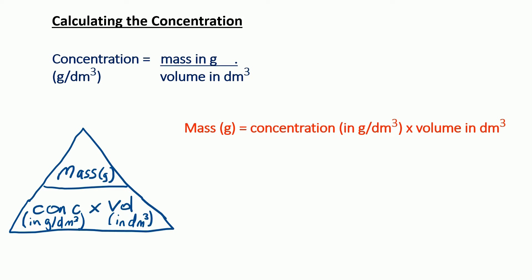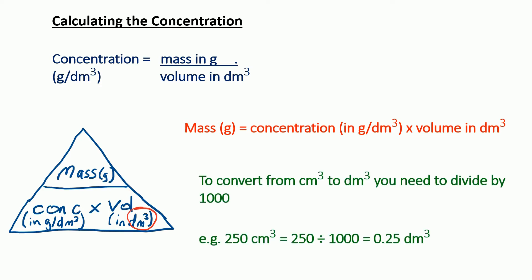I can't stress enough how much we need to realise that the volume is in dm cubed. A lot of people make mistakes if the exam question gives the volume in cm cubed — you first need to convert it. To convert cm cubed to dm cubed, we divide by 1000. For example, 250 centimetres cubed divided by 1000 becomes 0.25 dm cubed.